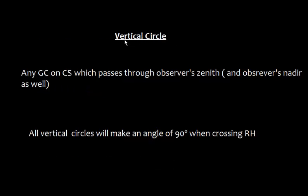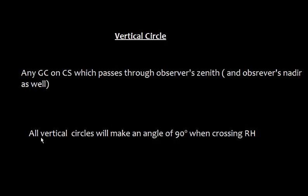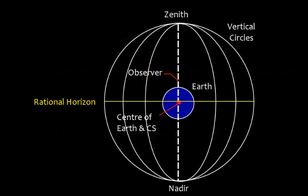Now let's define vertical circles. A vertical circle is any great circle on the celestial sphere which passes through the observer's zenith and nadir. Looking at the diagram, these are the vertical circles. All vertical circles will make an angle of 90 degrees when crossing the rational horizon — each one is 90 degrees. These are great circles, and all vertical circles make an angle of 90 degrees with the rational horizon.